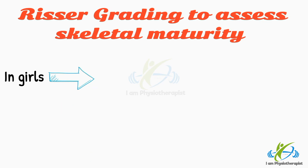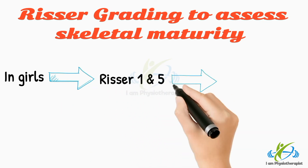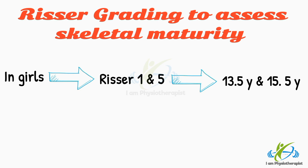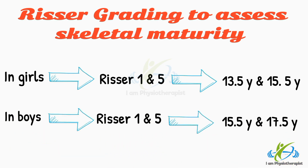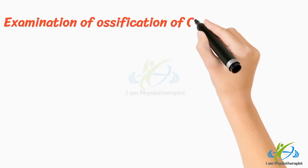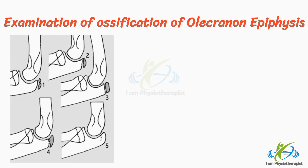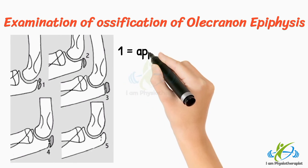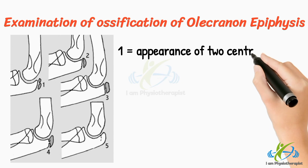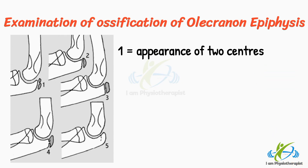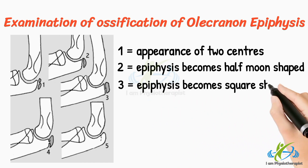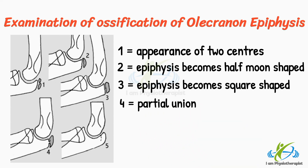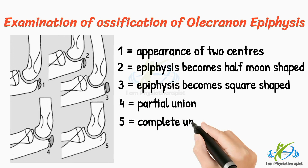In girls, Risser 1 and 5 commonly occur at ages 13½ and 15½, and in boys at 15½ and 17½. R4 shows the apophysis becomes half-moon-shaped; then square-shaped; then partial union. R5 shows complete union.